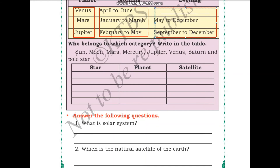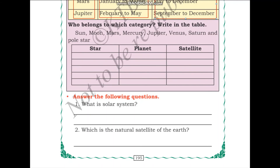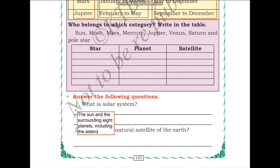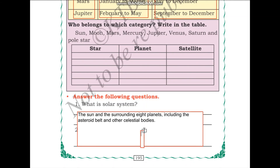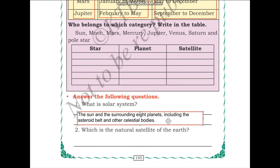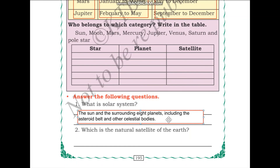The next question is: what is the solar system? The solar system can be defined as the Sun and the surrounding eight planets, including the asteroid belt and other celestial bodies. Whatever orbits around the Sun is actually a part of the solar system. This includes the Sun, the surrounding eight planets, the asteroid belts, and other celestial bodies such as satellites, the dwarf planet Pluto, and comets and asteroids.